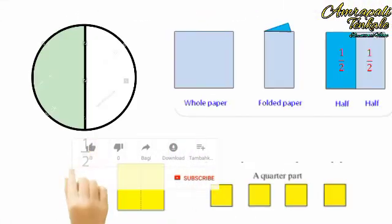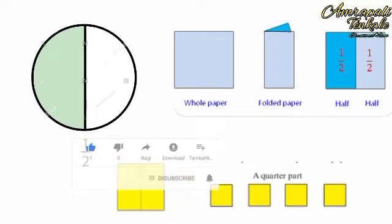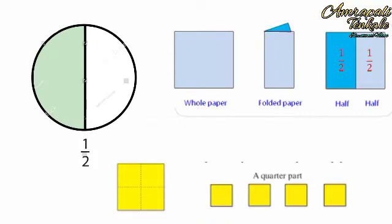In the last video we learned half and a quarter. Half means when something is divided into two equal parts, each of the parts is a half of that thing. A quarter means when something is divided into four equal parts, each of the parts is a quarter of that thing.